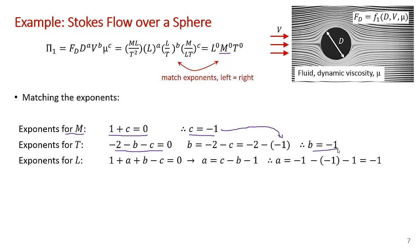Now we do our exponents on the dimension L. We have 1 + a + b - c = 0. Now I've gotten b and c, so I'm going to solve this equation for a. So a = c - b - 1. I make the substitutions for c = -1 here and b = -1 here. So -1 + 1, that's going to go away. You just end up with -1.